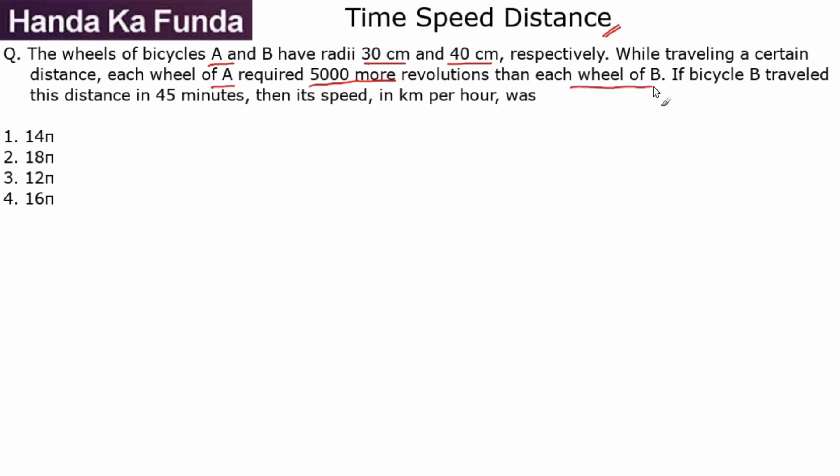Let's focus on this. In one revolution, they will cover their circumference, or 2πr, which means the first bicycle would cover 2π times 30, or 60π, whereas the second one would cover 80π. Now, how many revolutions have they taken? We don't know, but what we know is A has taken 5000 more revolutions and both of them have covered the same distance.